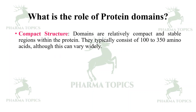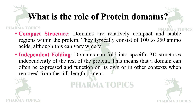The role of protein domains: it provides a compact structure with stable regions within the protein. They typically consist of 100 to 350 amino acids, although this can vary widely. Independent folding domains can fold into specific 3D structures.